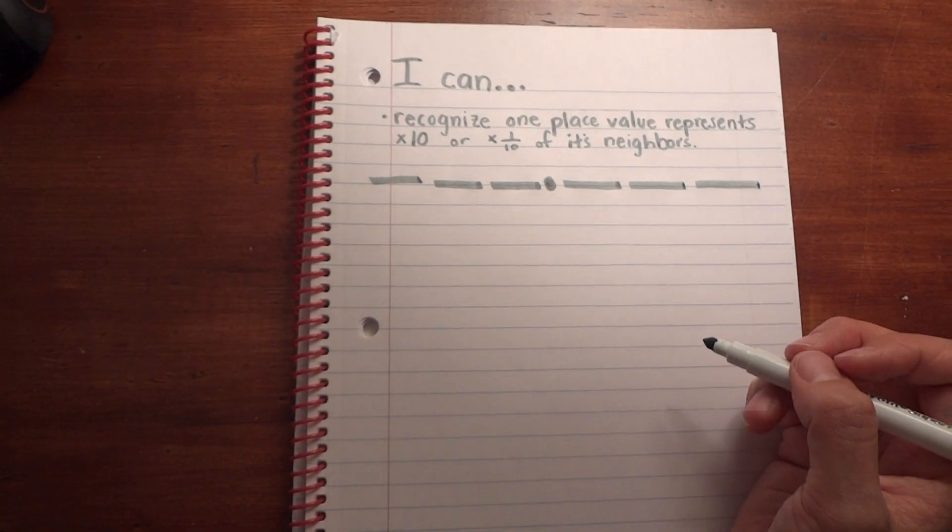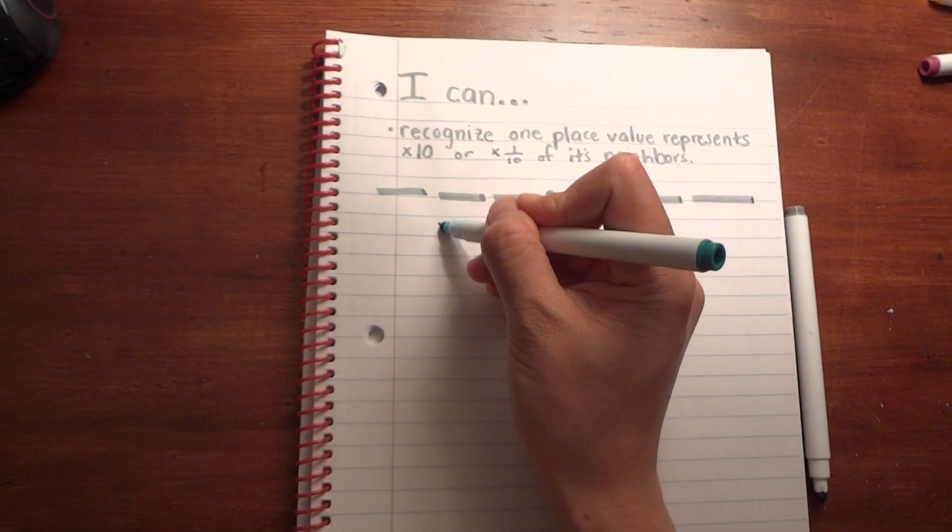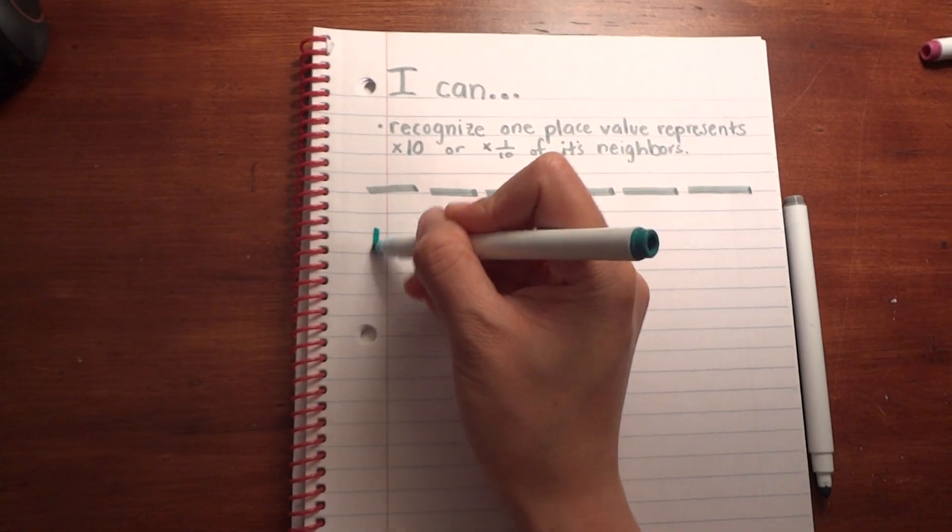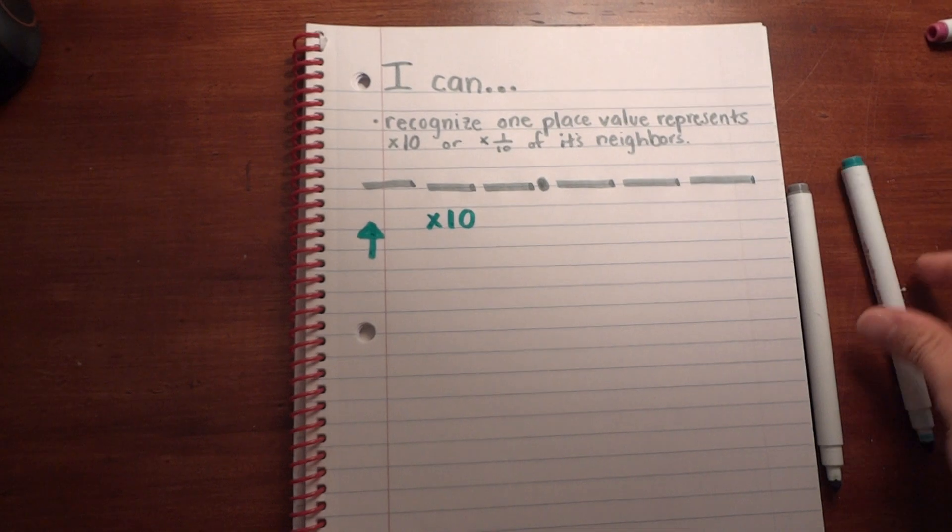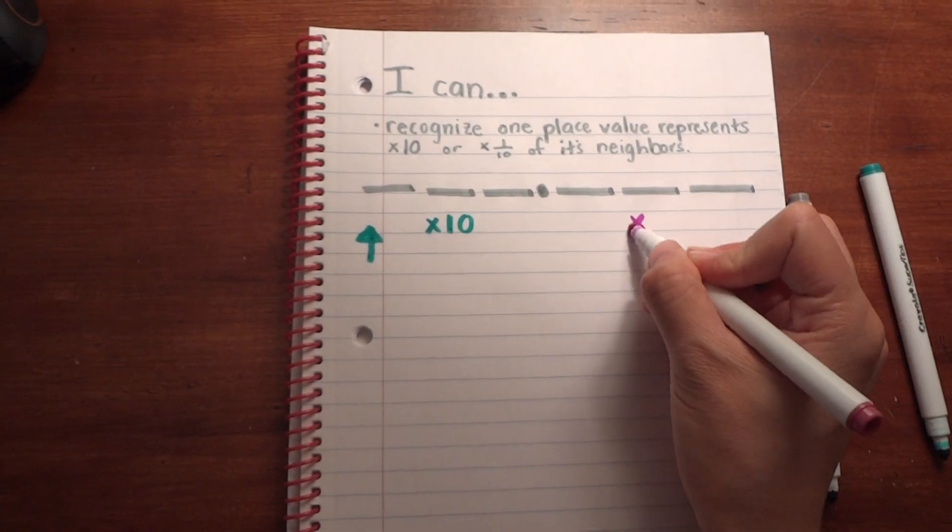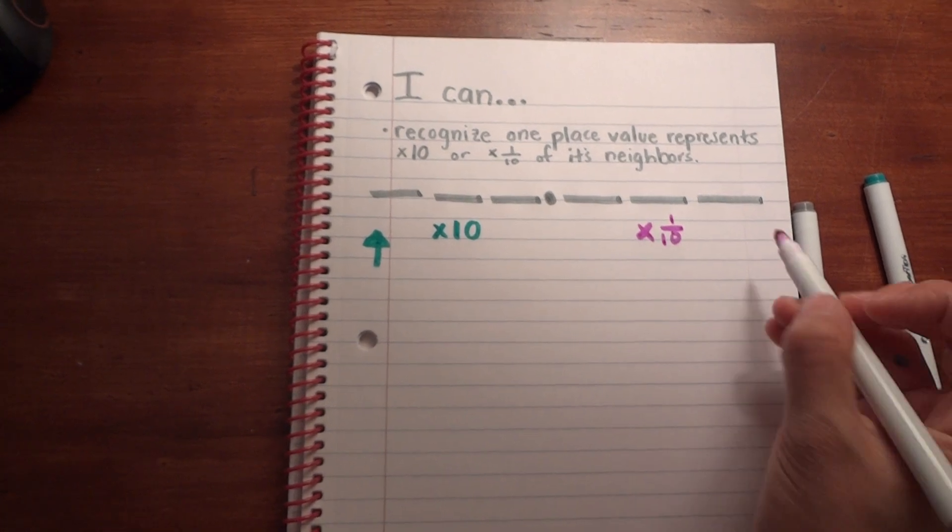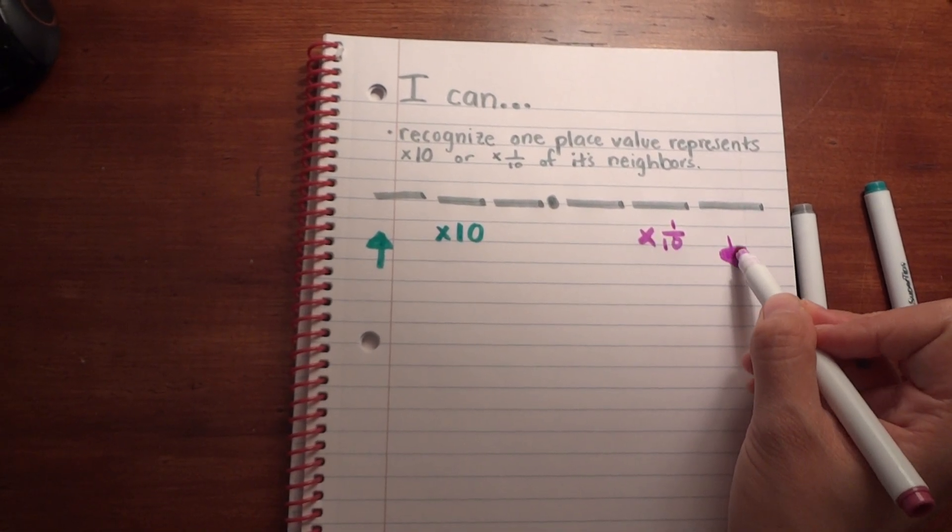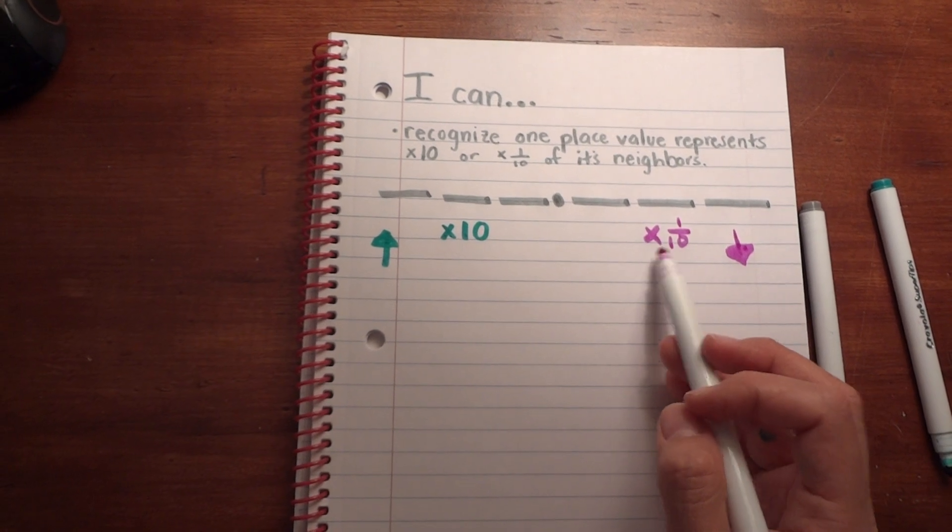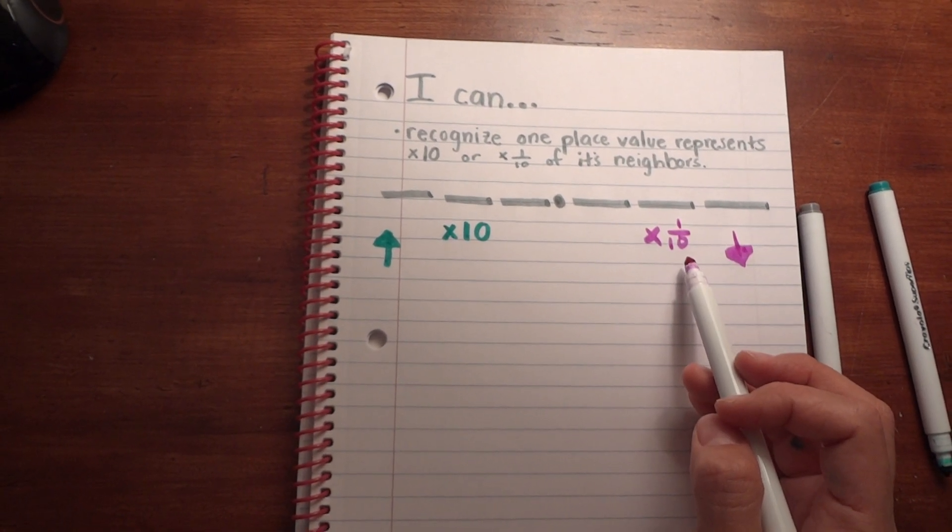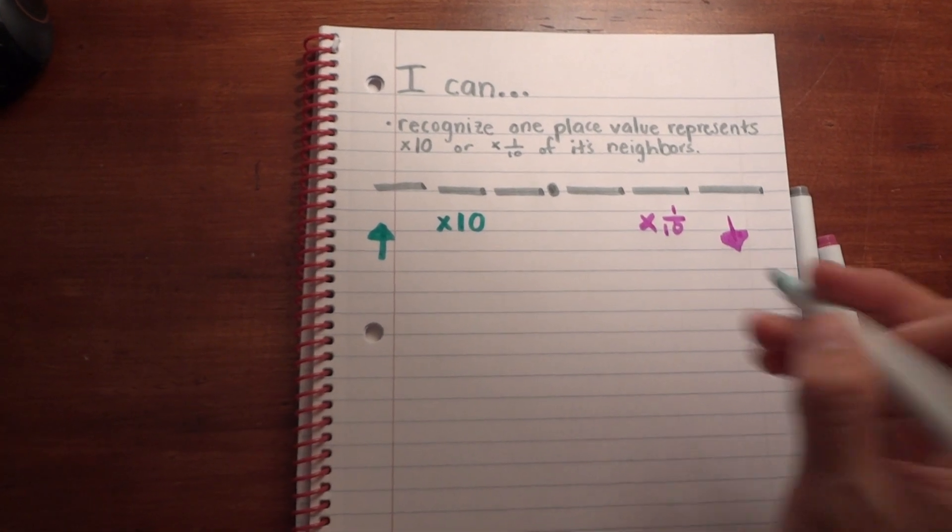When you say times ten, you're increasing its value. When you say times one-tenth, even though there's a multiplication symbol, you're actually decreasing its value because you're taking a part of your original number when you multiply by a fraction less than one.